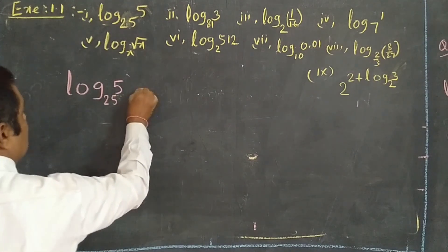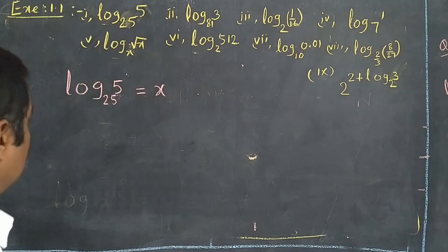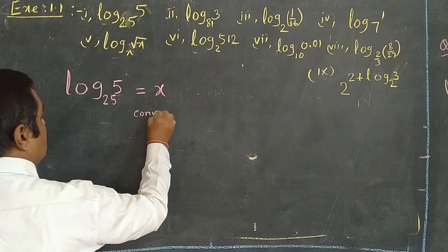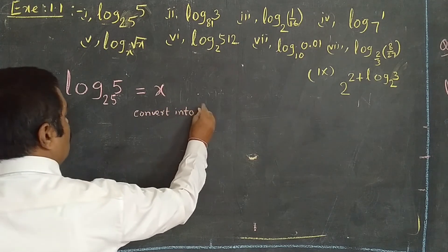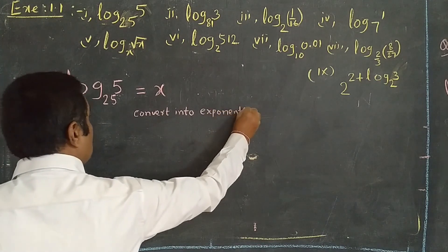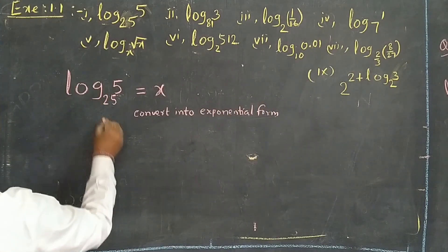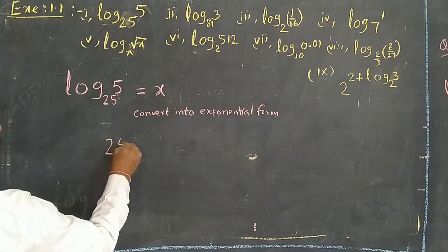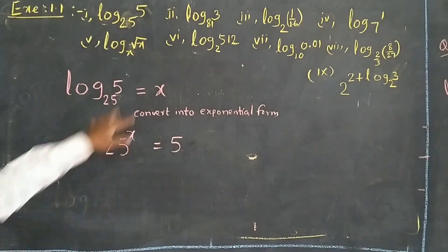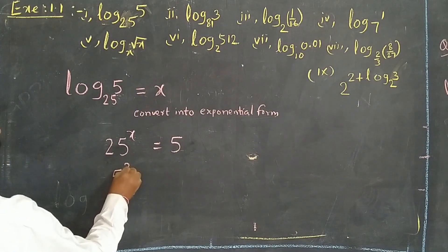First question: log 5 base 25. You have to take it equal to x — the value of the whole expression you take as x. Convert it to exponential form. So the base is 25 and the power x is equal to 5. These two are interchanged. So 25 we have to write as 5 power 2.